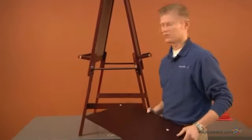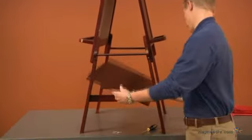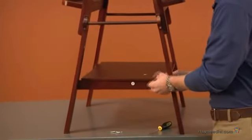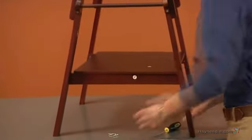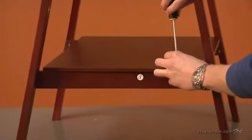Next we can grab our bottom panel labeled as G and just slide it in between the frame here, lining up our holes and using four more of our number one screws. Tighten it into place.